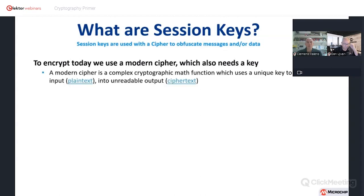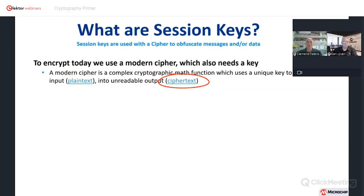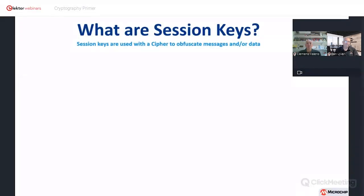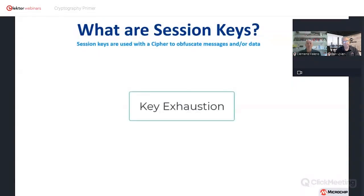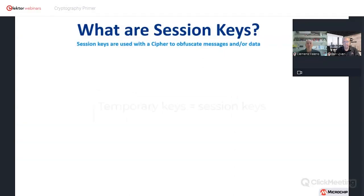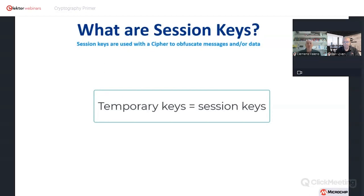Session keys are used with a cipher to obfuscate messages and data. Today we use a modern cipher — a complex cryptographic math function which uses a unique key to obfuscate plain text into unreadable cipher text. There are many types of ciphers: AES, DES, and others. A critical mass of ciphertext encrypted with the same key presents a risk called key exhaustion. Therefore, temporary session keys are used and changed as required to thwart these vulnerabilities. A session can be of any length — every message transmission, or a full day or week of transmissions — depending on how much data you're converting from plain text to cipher text. You don't want to convert too much ciphertext with the same key. In the military or financial world, keys are sometimes rotated every 100 milliseconds during an ongoing transmission.